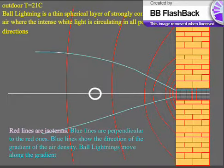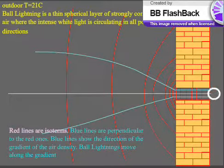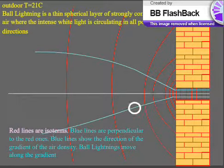This means that the ball light in the air, where the temperature is not constant, tends to move in the region where the air is cooler. The ball light is a very sensitive device for